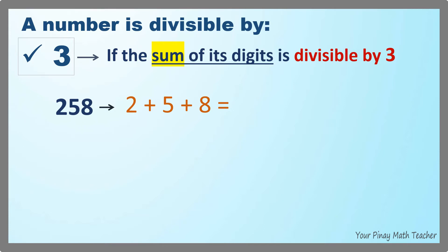Let's add them. What is the sum? Yes, it's 15. Is 15 divisible by 3? Can you divide 15 exactly by 3? Yes. So therefore, 258 is divisible by 3.